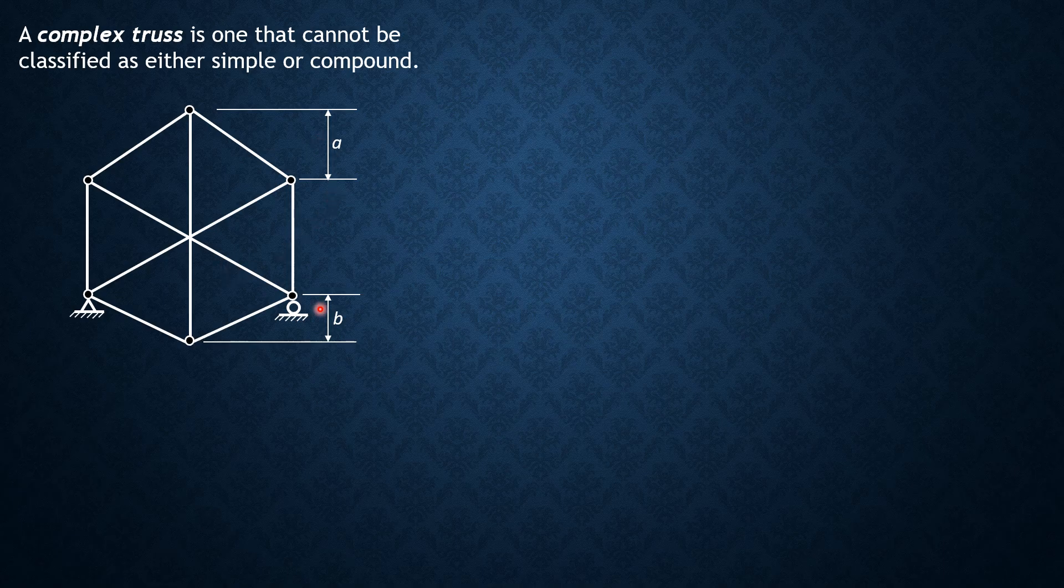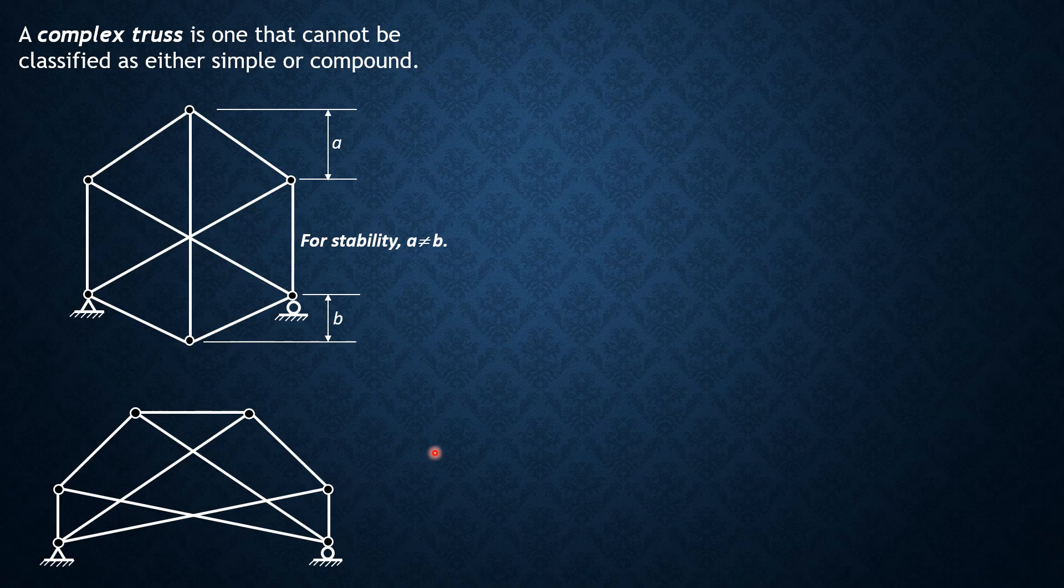This is only one member, one member, one member. For this truss to be stable, a should not be equal to b. When a is equal to b, this becomes unstable, and that is only manifested by computing the stresses which will give inconsistent results. Another example of a complex truss is this.